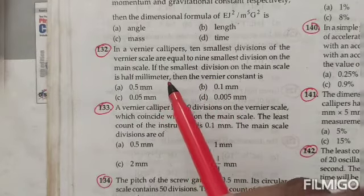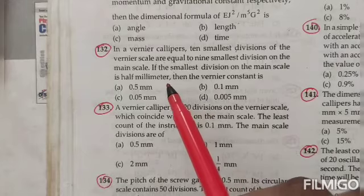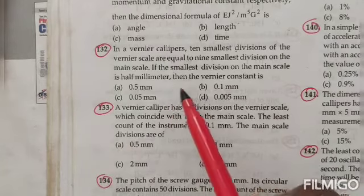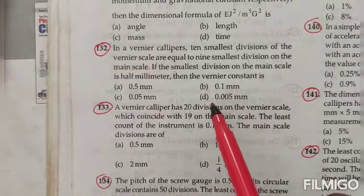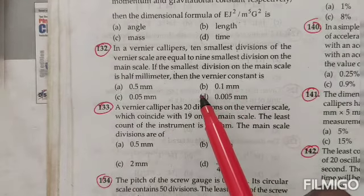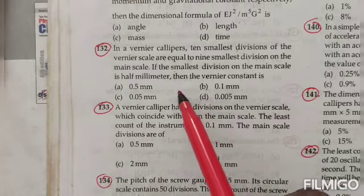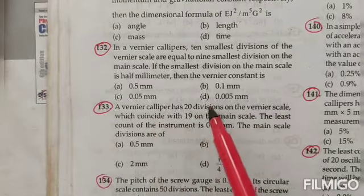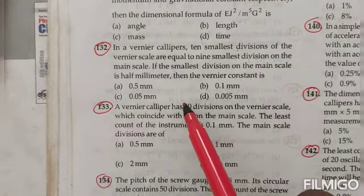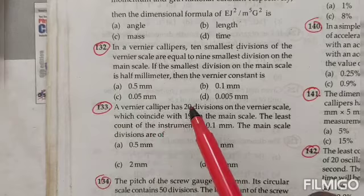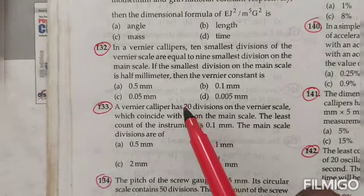If the smallest division on the main scale is half millimeter, then the vernier constant is—that means here they're asking the least count. Some options are given, everything in millimeters: 0.5, 0.1, 0.5, 0.05.